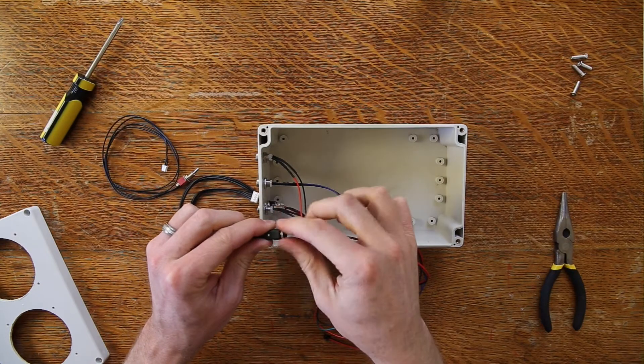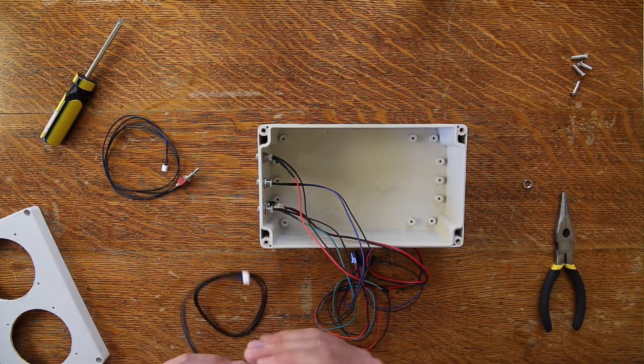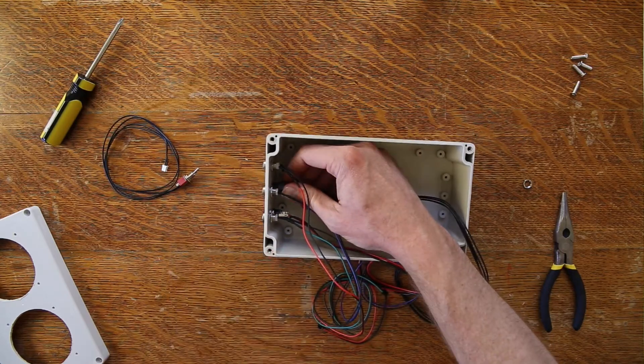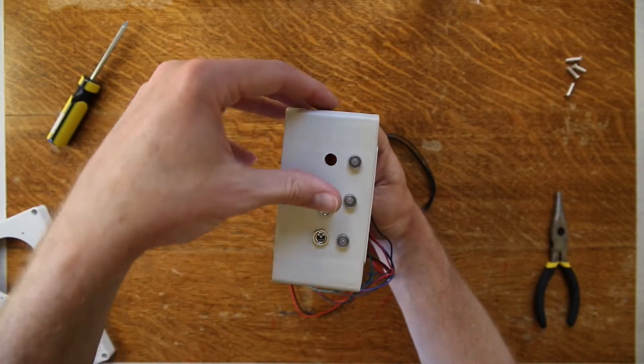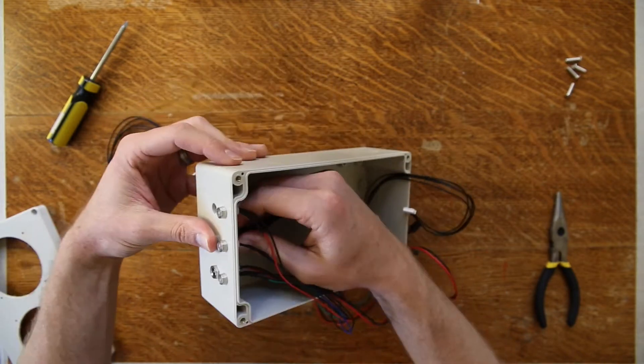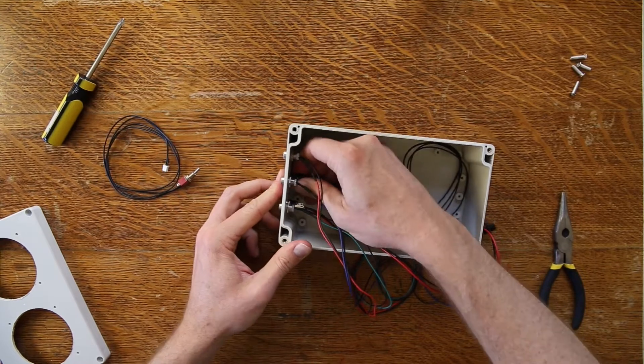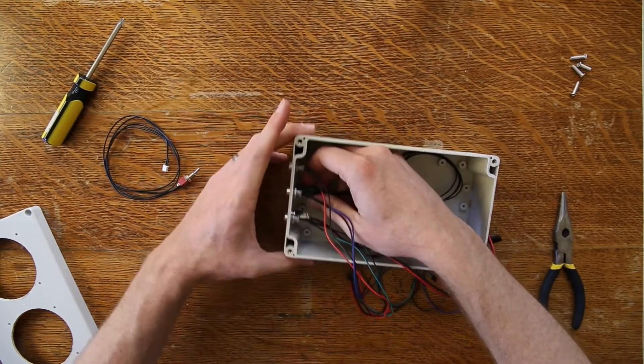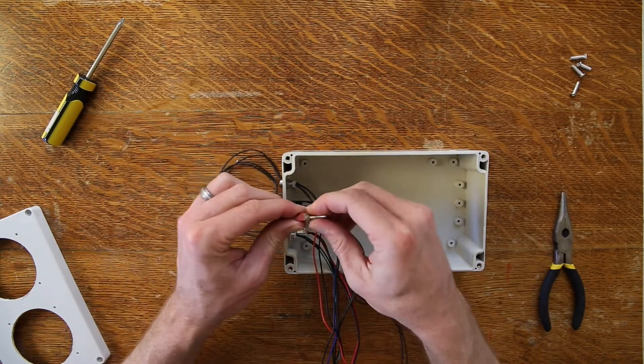Next is the 3.5 millimeter cable or the eighth inch cable connector. So take off the nut again and push it through the same as the power supply connector. Once you have it through, I put my thumb or finger on the nut and twist the connector side to tighten.